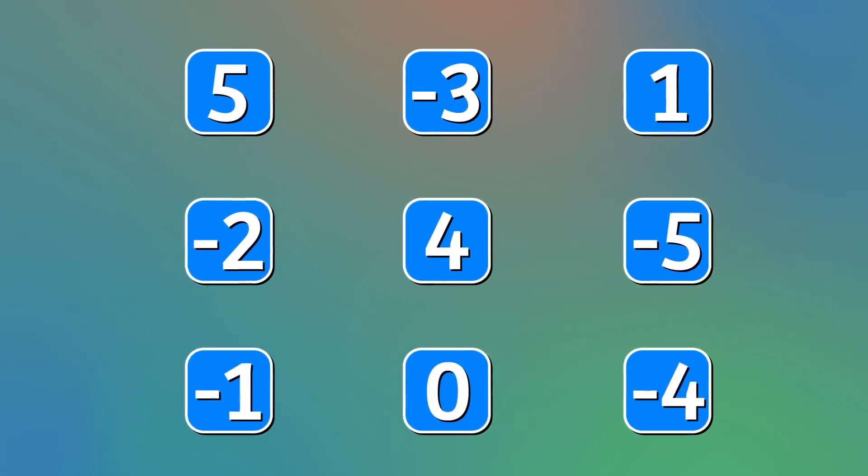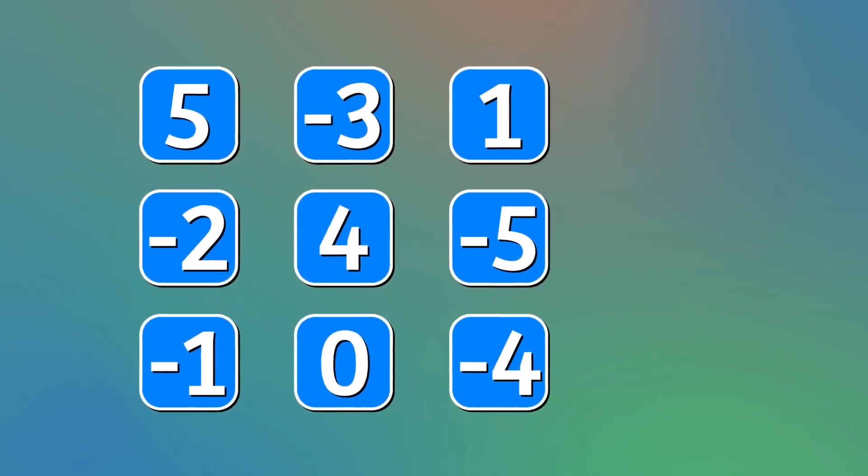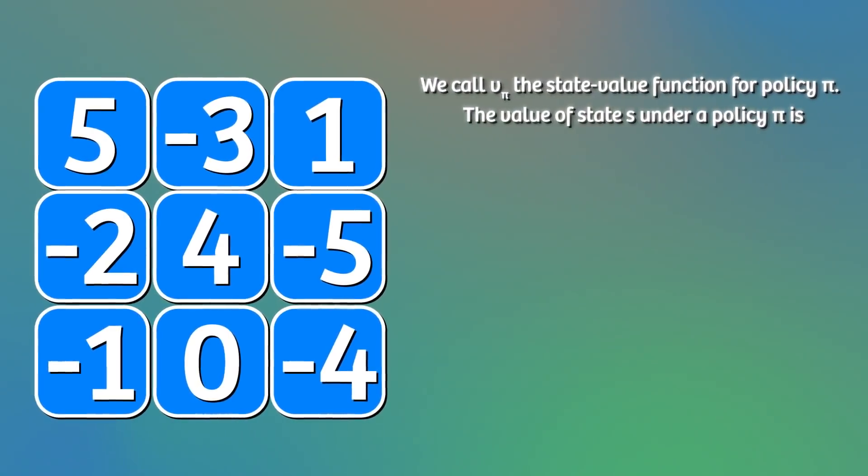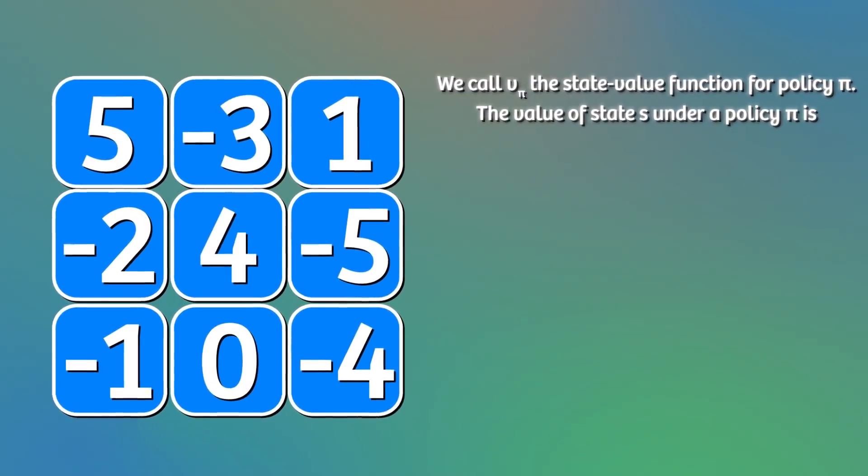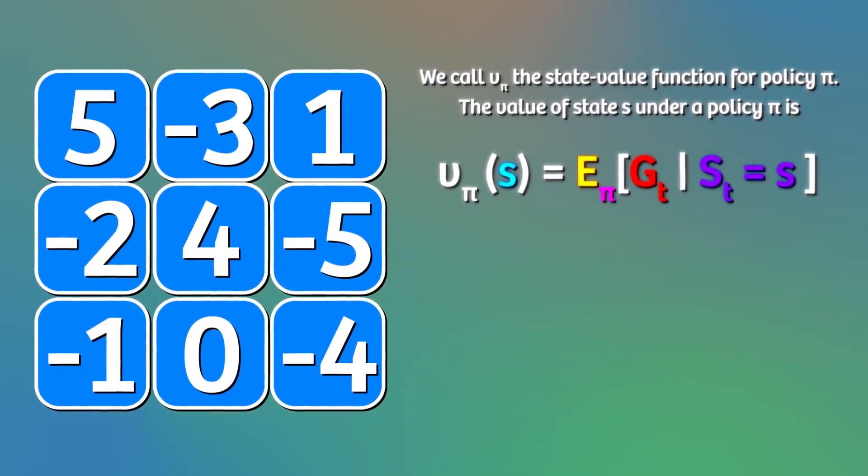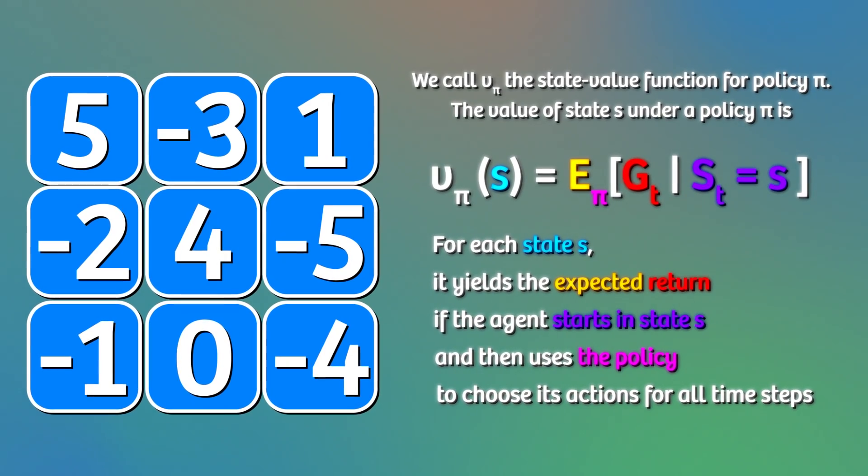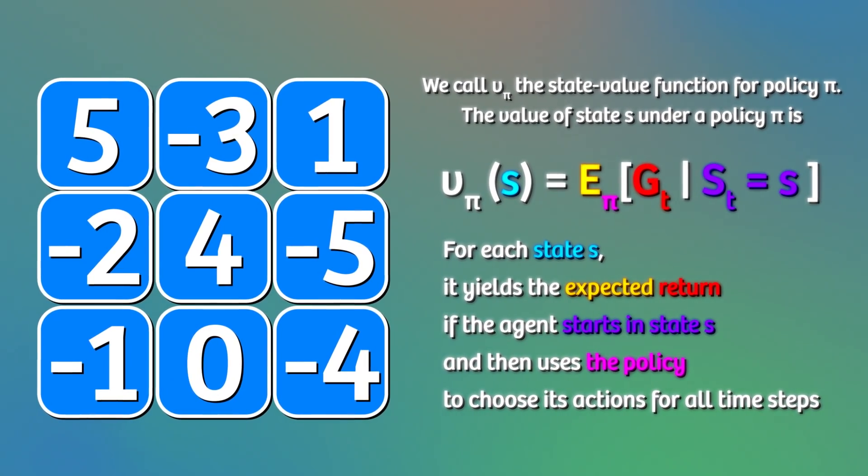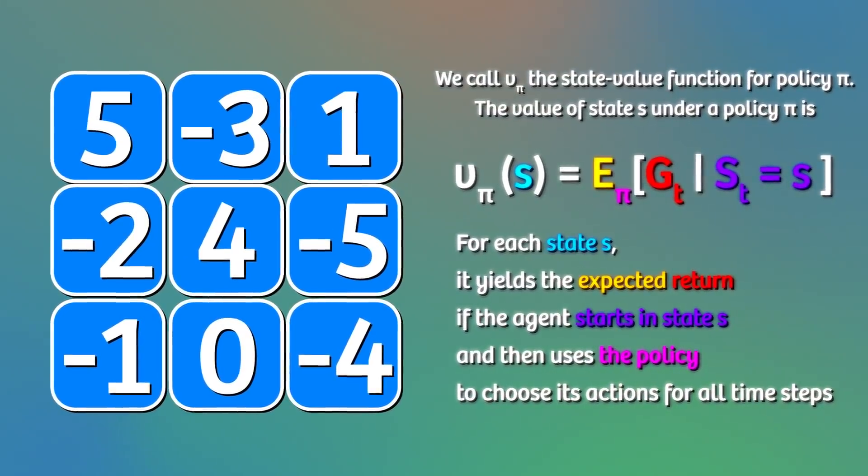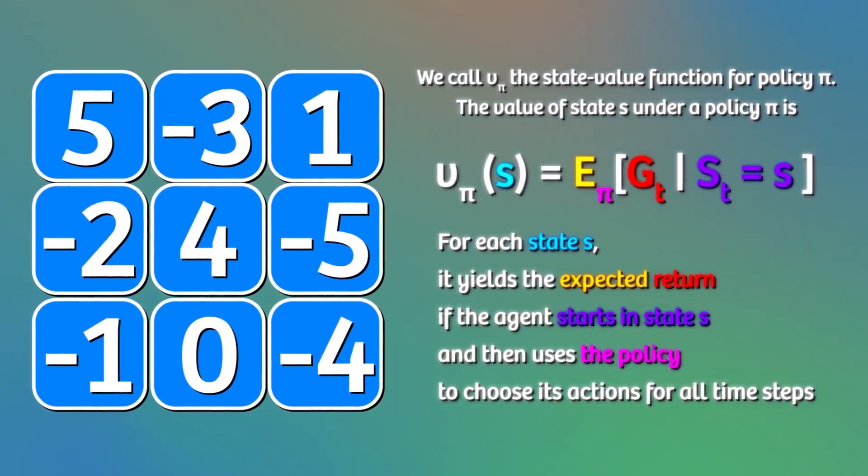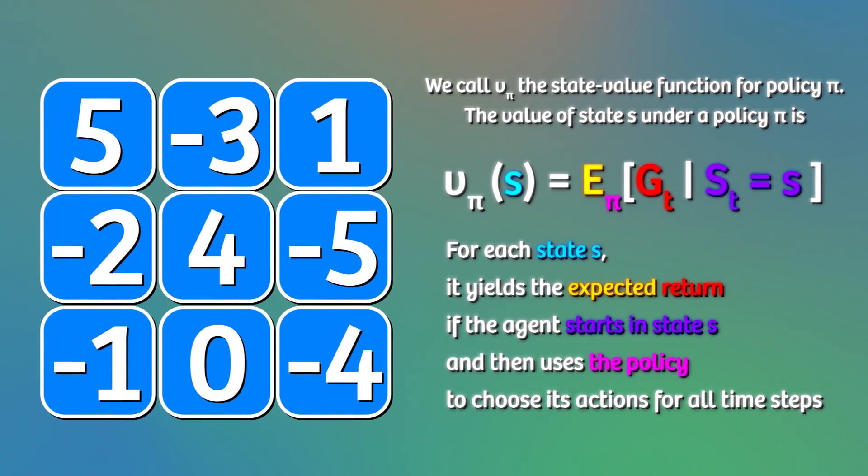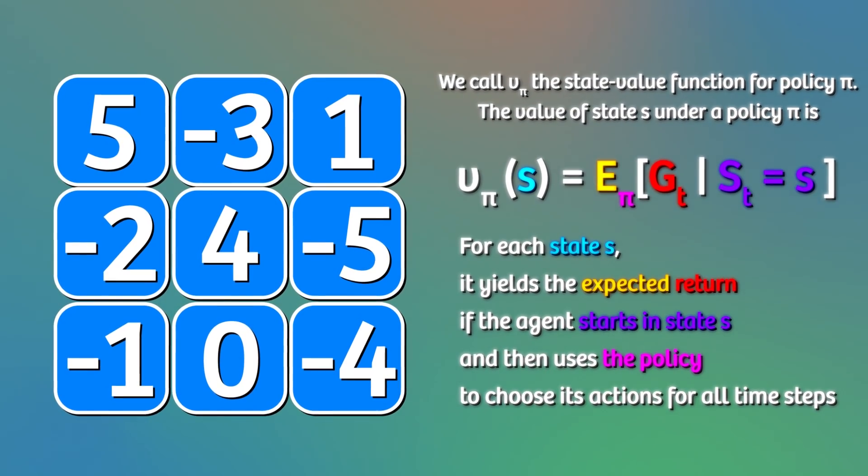We can think of this grid of numbers as a function of the environment state. For each state, it has a corresponding number. We can refer to this function as the state value function. For each state, the state value function yields the expected return. If the agent started in that state and then followed the policy for all the time steps, the state value function for policy pi is the function of the environment state. For every state s, it tells us the expected return if the agent starts in state s, and then uses the policy to choose its actions for all time steps. The state value function will always correspond to a particular policy. So if we change the policy, we change the state value function.